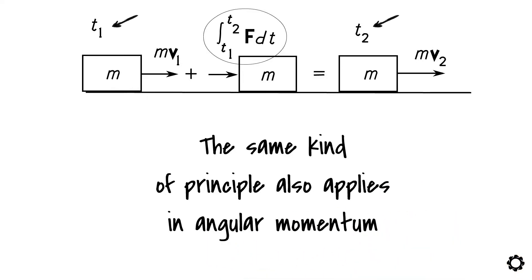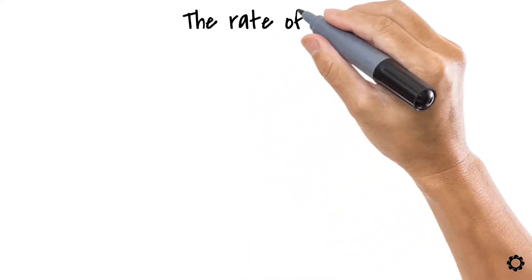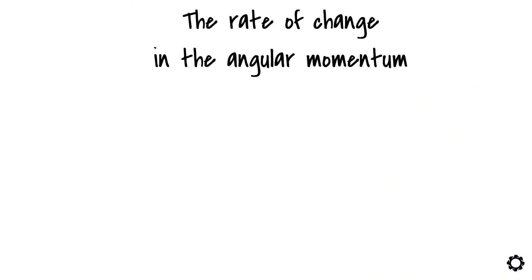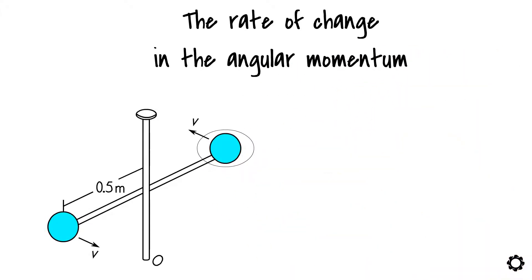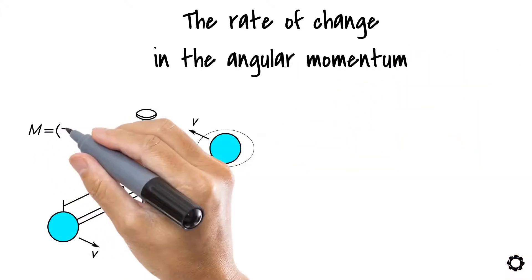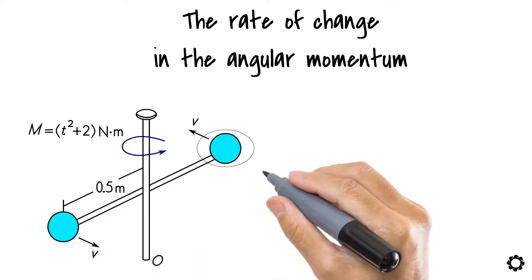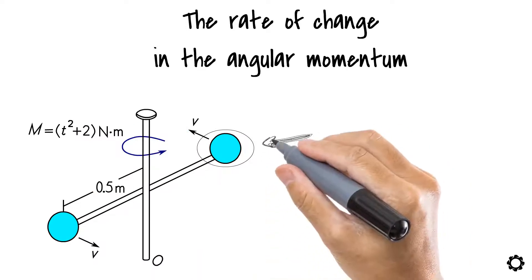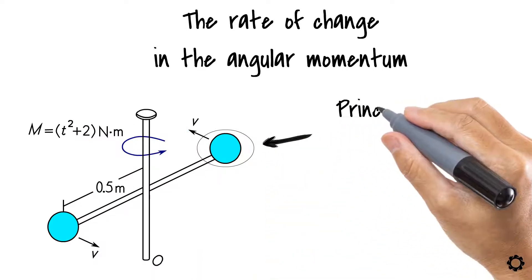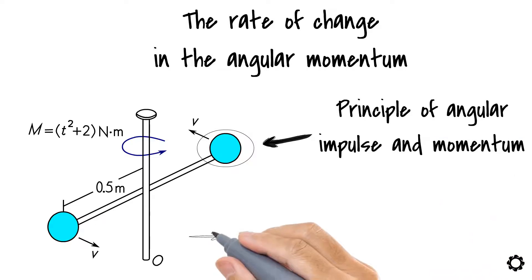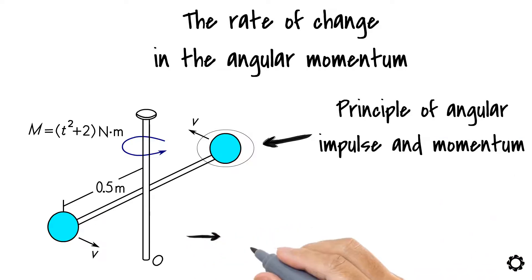The difference this time, however, is that the rate of change in the angular momentum of a single particle is caused by the applied external moments. We call this principle the principle of angular impulse and momentum, which we can also express mathematically as follows.